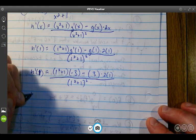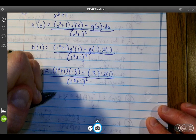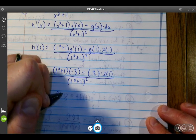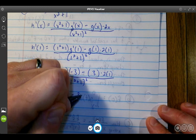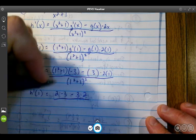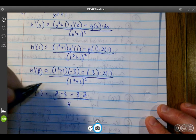I will show you the simplified answer. So we get 2 times (-3) minus 3 times 2, all over 2², which is 4.